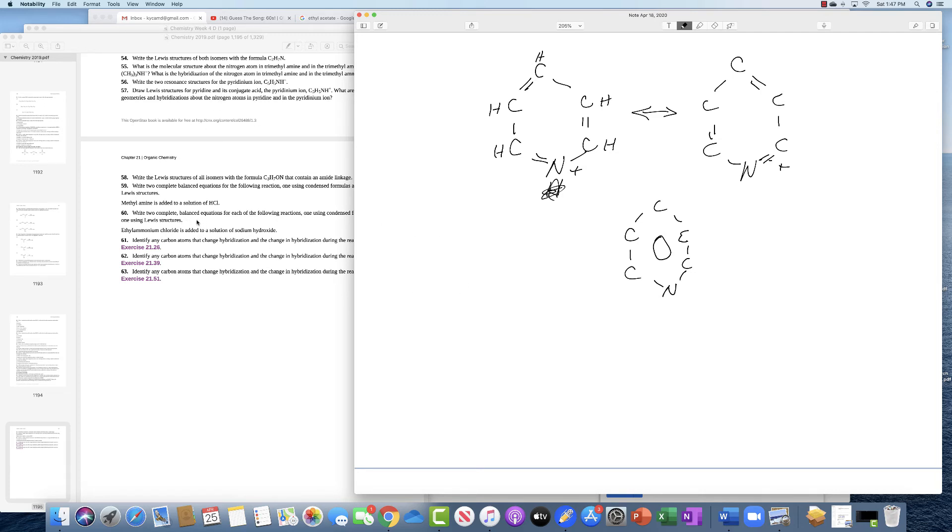Number 60 says write two complete balanced equations for each of the following reactions, one using condensed formula, one using the Lewis structure. Ethyl ammonium chloride, so ethyl CH3CH2 ammonium chloride plus sodium hydroxide. Now what makes the most sense here is for this sodium here to combine with this chlorine, and for this hydroxide to end up over here. So that, sorry, there's a hydrogen here.